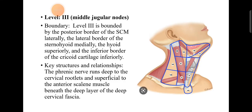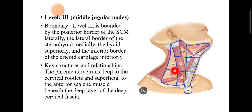Level 3, the mid jugular nodes, is bounded by the posterior border of the sternocleidomastoid muscle laterally, the lateral border of the sternohyoid medially, the hyoid bone superiorly, and the inferior border of the cricoid cartilage inferiorly.